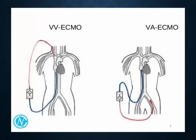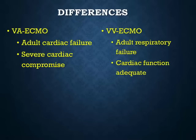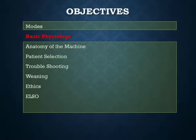Similarly, blood can be taken from the IVC and drained back into the femoral artery after the oxygenator. The difference between VA ECMO and VV ECMO: VA is usually for adult cardiac failure and severe cardiac compromise. If you do not have cardiac compromise, patients can do just fine with VV ECMO, which you'll see for adult respiratory failure with the caveat that cardiac function is adequate.